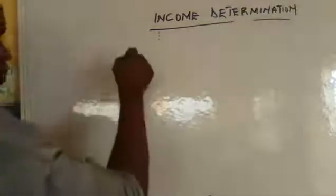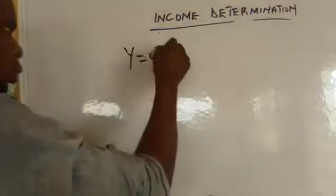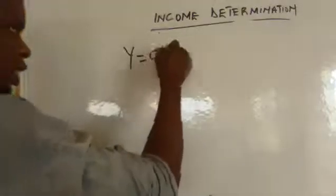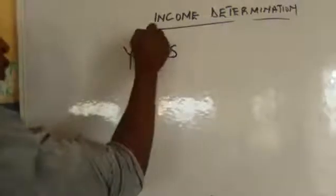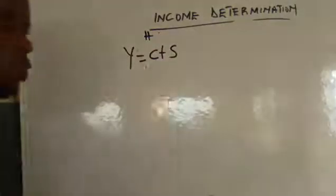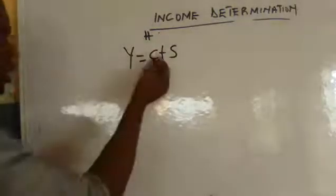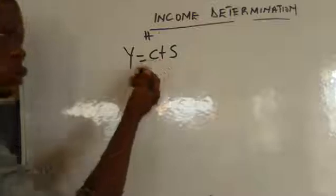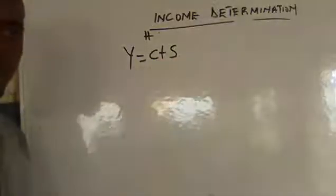The income of the household can be written as: income equals consumption plus saving. It means that the household can use its income for two things — you consume part of it, then you save the remaining.